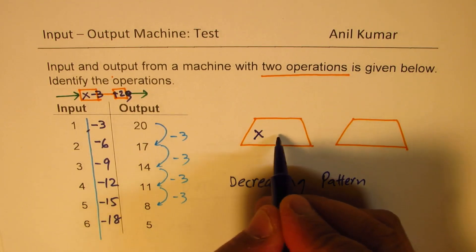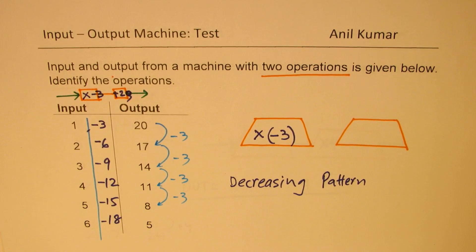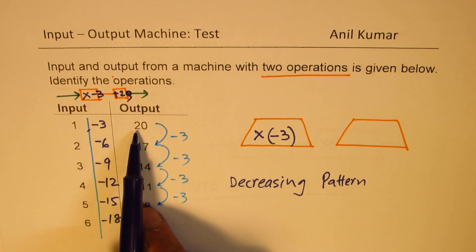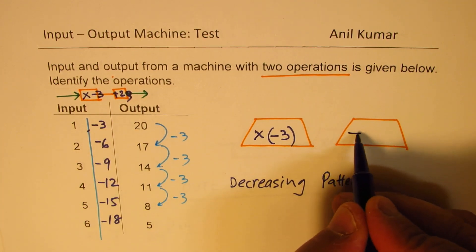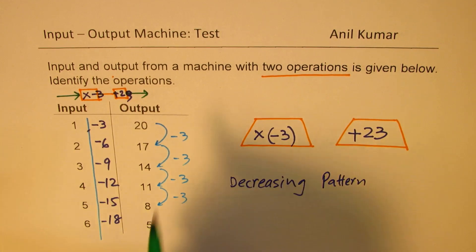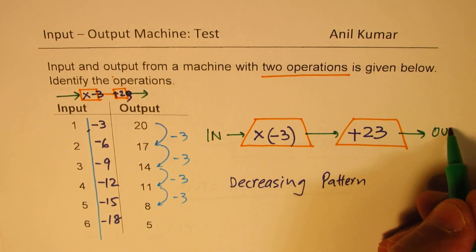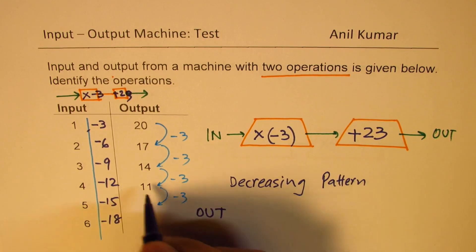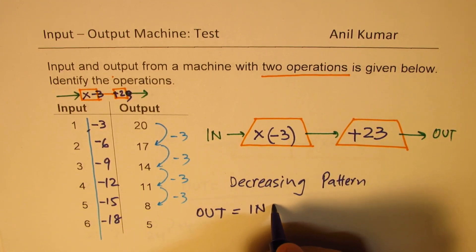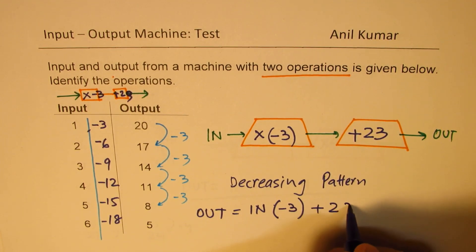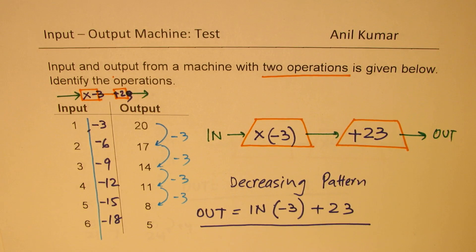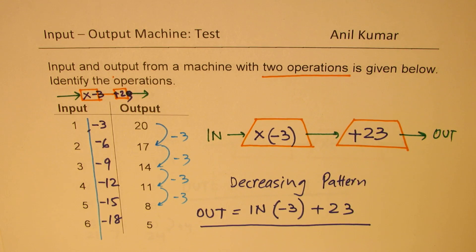The first operation is to multiply by negative 3, then add 23 to get the output. We can write the explicit rule as: output = (input × −3) + 23. For example, input 1: 1 × −3 = −3, plus 23 = 20. Check the result — it works for all inputs. That is the explicit rule for this input-output machine.